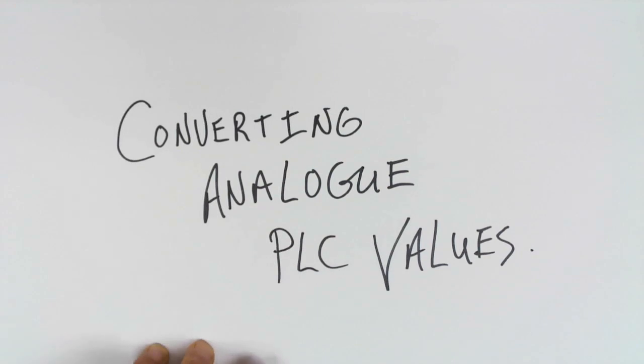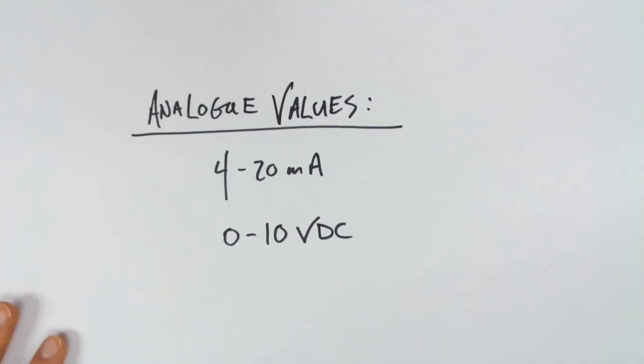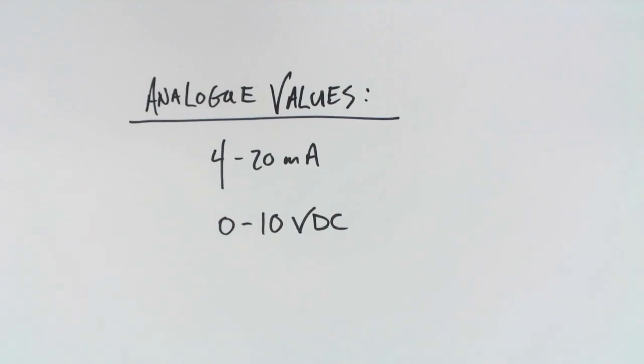First thing we need to do is have a basic idea as to what the different values are that we could be expecting. For the most part, in PLCs and process control, the two most common forms of analog signal are either 4 to 20 milliamps or 0 to 10 volts DC.